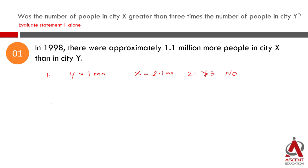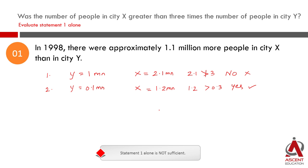If we assume the population of Y is 0.1 million, then the population of X will be equal to 1.2 million. In that case, is X greater than 3Y? Three times 0.1 is 0.3, and 1.2 is greater than 0.3, so the answer would be yes. Since we got both yes and no, Statement 1 is not sufficient to find the answer.